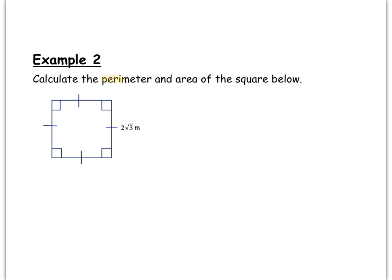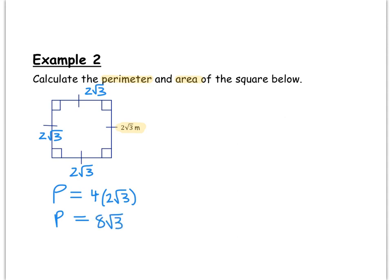Our next example asks us to calculate the perimeter and area of a square with sides that measure 2√3 meters. To calculate the perimeter, we add up all four sides: 2√3 + 2√3 + 2√3 + 2√3. Since all four sides have the same length, this is the same as 4 × 2√3. Multiplying 4 × 2 × √3 gives us 8√3 meters for the perimeter.